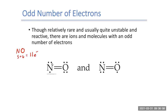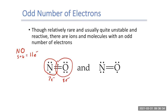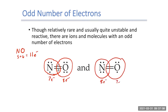Once you draw the Lewis structures, you can end up with either the first structure or the second structure. In the first structure, nitrogen has seven valence electrons around it and oxygen has eight. Remember, each line represents two electrons, so they'd be sharing four electrons between them.